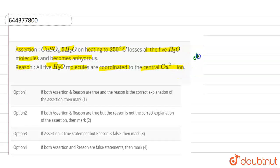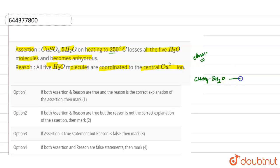Looking at the assertion first — this compound on heating at 250 degrees Celsius: when we heat copper sulfate pentahydrate (CuSO₄·5H₂O) at 250 degrees Celsius, what we get is CuSO₄ and 5 moles of water.